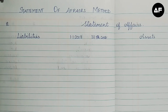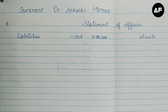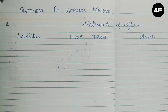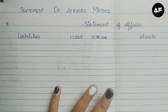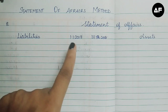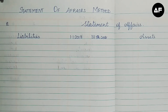To find the capital, we are going to open a statement of affairs. There are two ways to do this sum: either open separate statements of affairs for the opening capital and the closing capital, or do both opening and closing in the same combined format. I'll show you both ways — whichever is easier, you can apply in your sum.